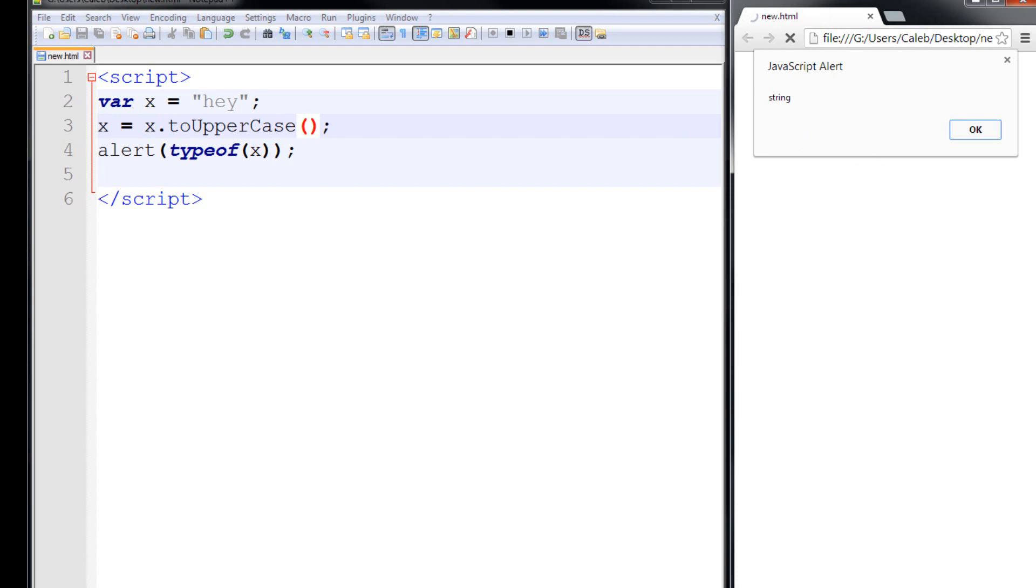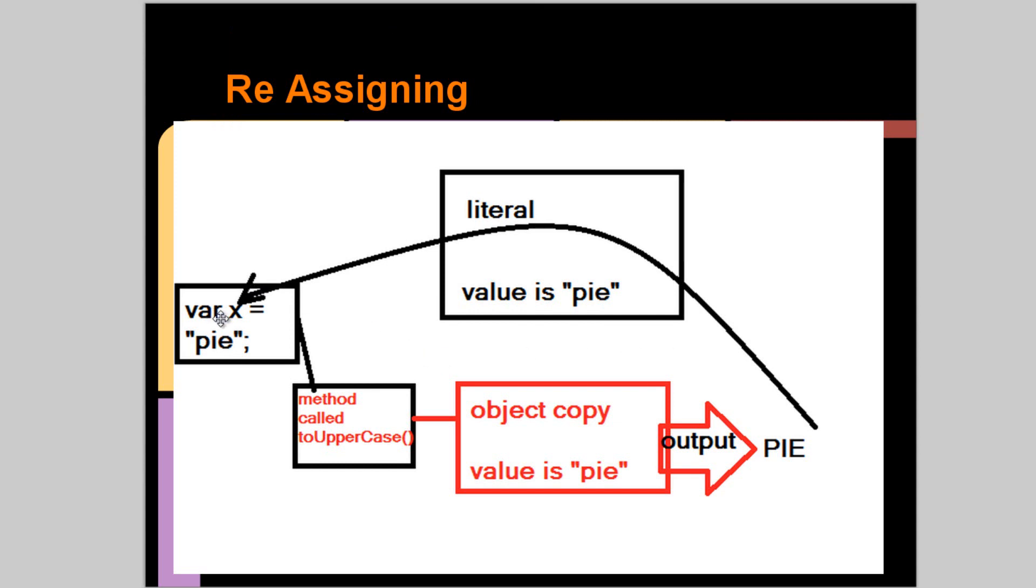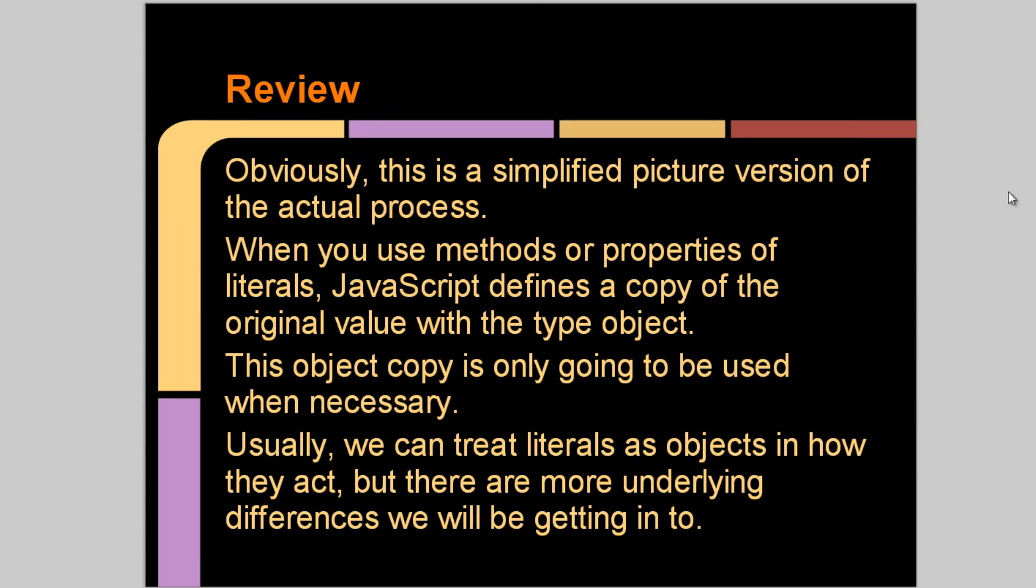So if we look back at our presentation here. As I was saying, we changed the variable x to the capital "HI", and it goes back to the literal value. So in review, obviously this is a simplified picture version of the actual process. When you use methods or properties of literals, JavaScript defines a copy of the original value with the type object. This object copy is only going to be used when necessary. Usually we can treat literals as objects and how they act, but there are more underlying differences we will get into in future videos.